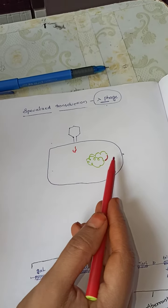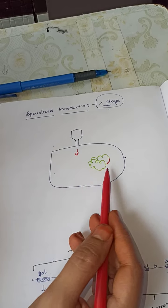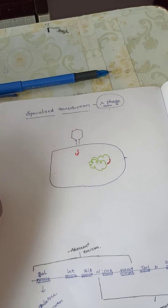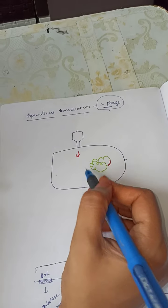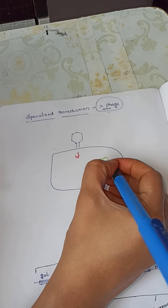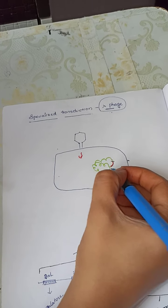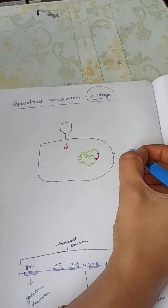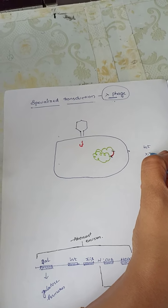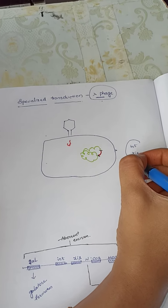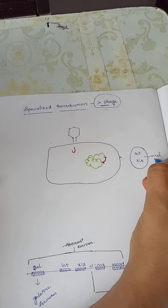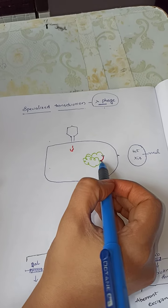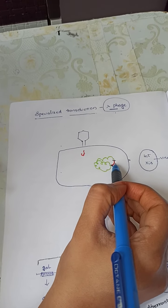But sometimes what happens during this separation: usually whenever the viral genome has to get excised from the bacterial genome, there are two genes within the viral genome — one gene is called the int gene and the other is called the xis gene. The products of these two genes play a vital role in cutting or excising the viral genome out from the bacterial genome.